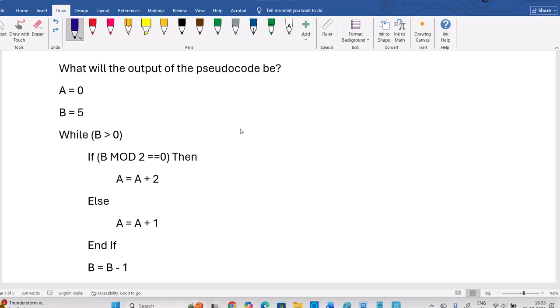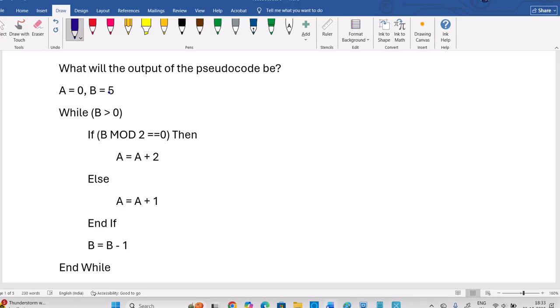Hello everyone, let us see this question. We are asking what will be the output of this pseudocode. They assigned a value as 0 initially. They set A as 0, B as 5.